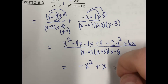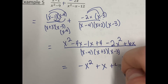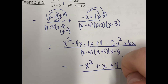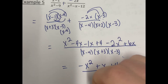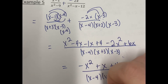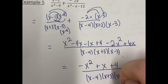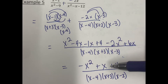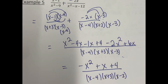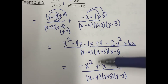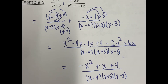And then we also have a 4 — no other like terms for that. So we write negative x squared plus x plus 4 on top, over x minus 4 times x plus 3 times x minus 3. We want to check to see if this can be simplified — it cannot. So at this point we are done with example number 5.